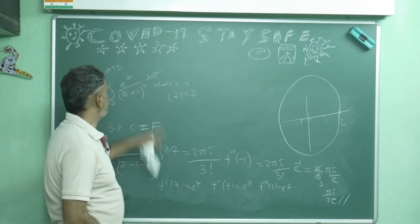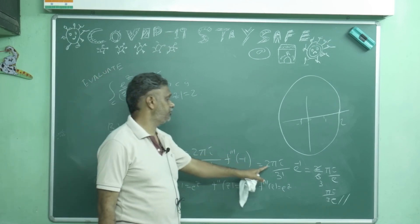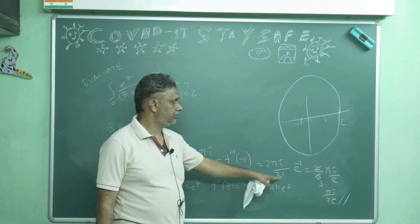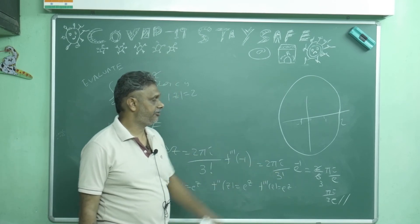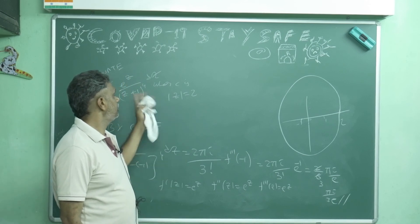Suppose e power 2z, what you will get? 8 into 2, 16 you will get. 16 by 6 you will get. That you can simplify according to that. Otherwise, same thing.